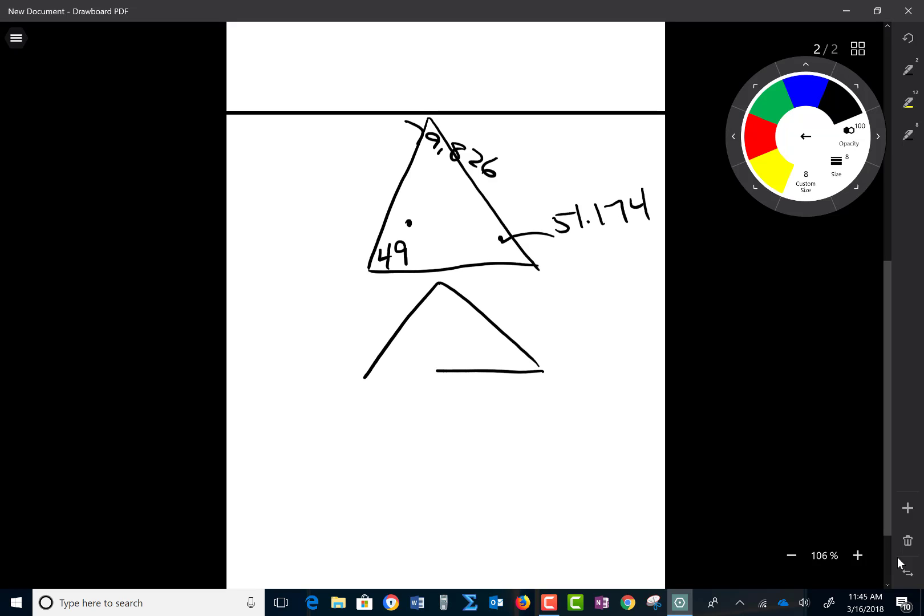But in this triangle, it might not be 51.174. It could be 180 minus 51.174, which is 128.826. And as long as when I add the two angles up, I still have enough room left for another angle because when I add those up, I get 177.826, I still have a little tiny bit of room for a third angle because the three angles add up to 180.